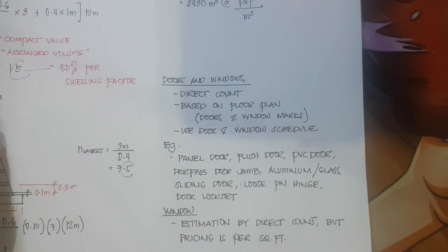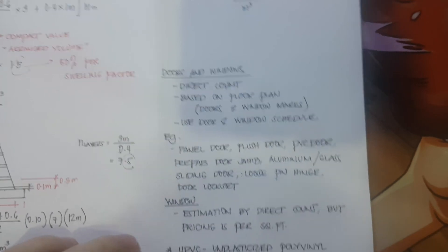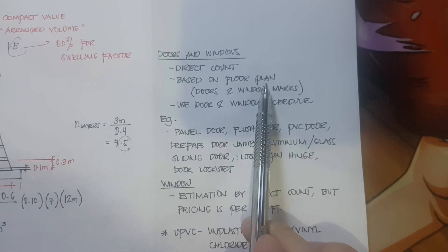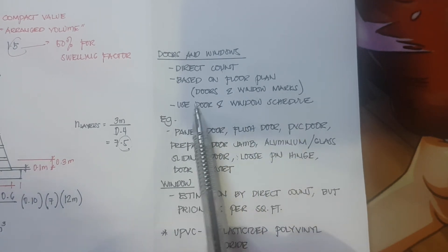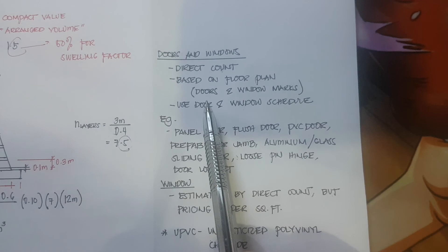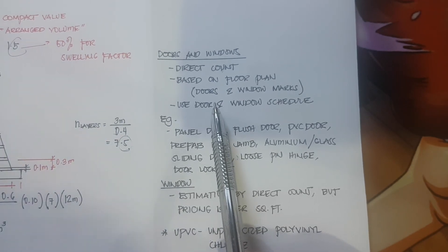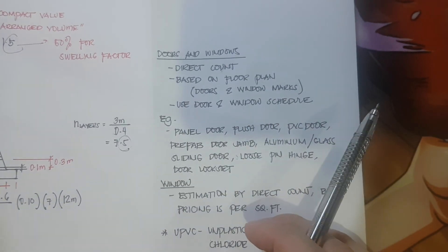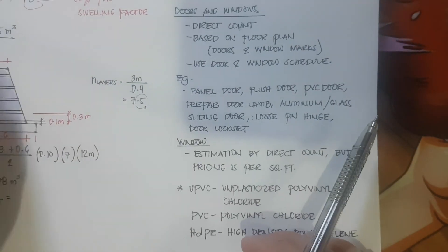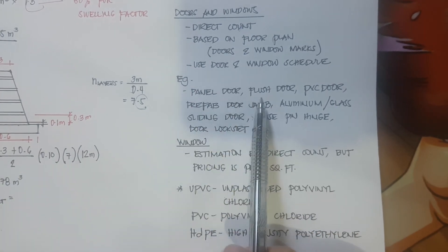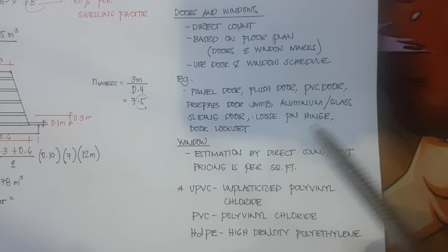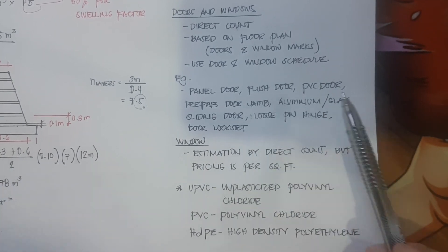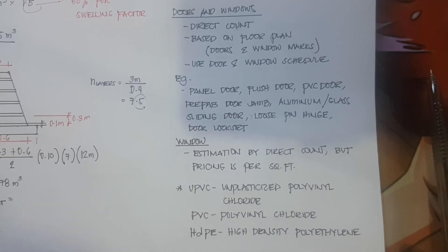Next would be the doors and windows. For the doors and windows it is simply a direct count. You just need to base it from your floor plan, specifically the door schedule and window schedule. There are identified the dimensions of our doors and windows. Examples of which are panel door, flush door, PVC door, prefab door, aluminum glass sliding door, loose pin hinge, door lock set, and so on. Those are direct count.